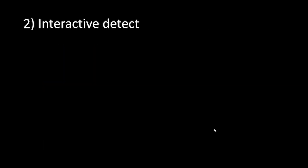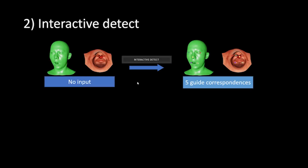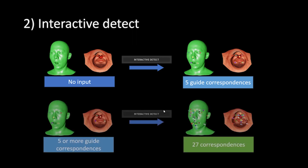In the interactive detect mode, the process is slightly different. After the character setup, if you click the interactive detect button, you will get five guide correspondences. You need to adjust these five markers to the correct position, and after that you can click the interactive detect button again and you will get the full correspondences.